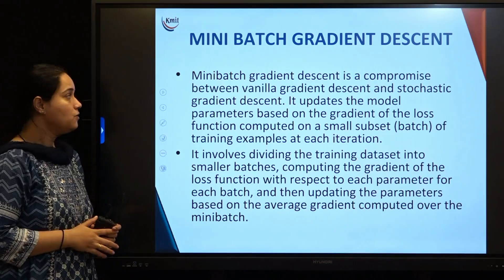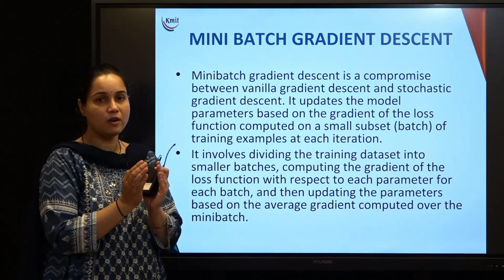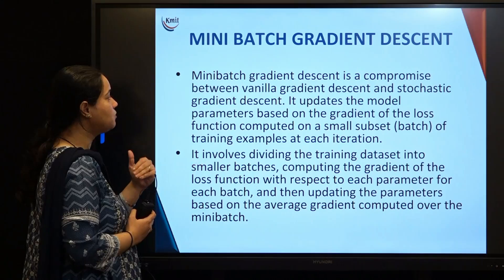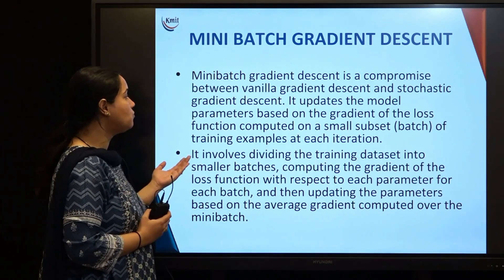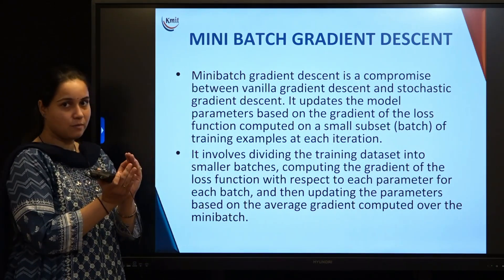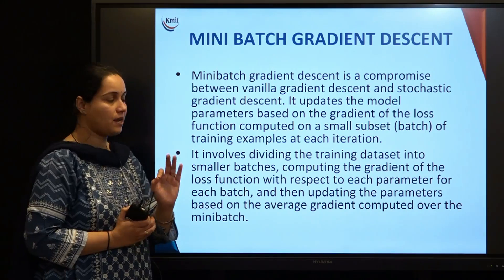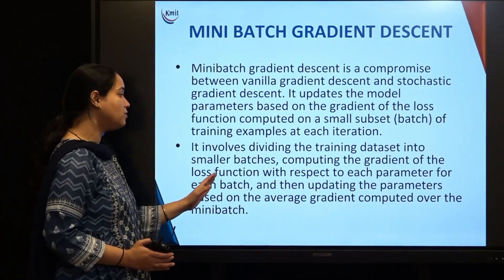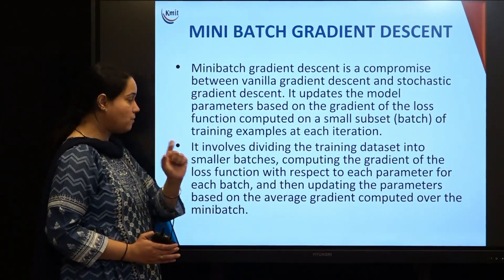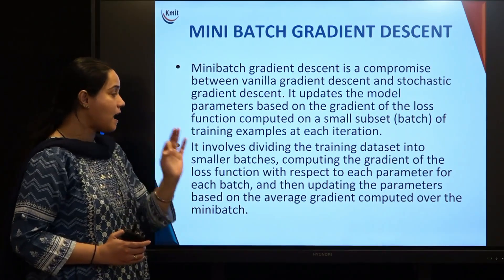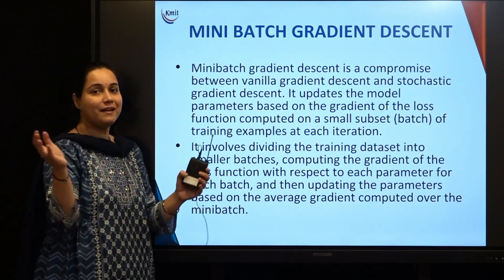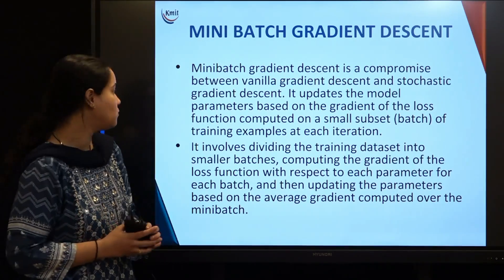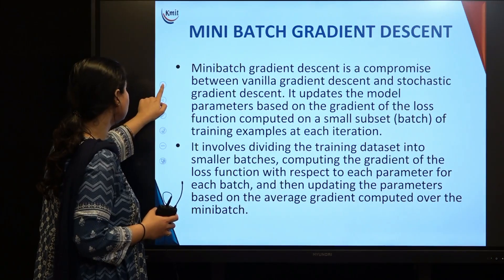Mini-batch gradient descent is a compromise between vanilla and stochastic gradient descent. It updates the model parameters based on the gradient of the loss function computed on a small subset — a mini-batch — of training examples at each iteration. The training dataset is divided into smaller batches; the gradient is computed for each batch and parameters are updated based on the average gradient computed over the mini-batch.